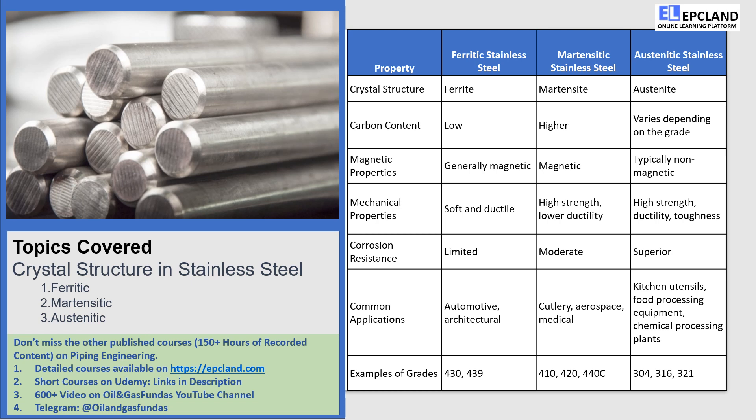Next up is martensitic stainless steel. This type of steel has a martensite crystal structure, which is achieved by quickly quenching high-temperature austenite. Martensitic stainless steel has a higher carbon content than ferritic stainless steel, which gives it its high strength. However, it also has lower ductility and fracture resistance. It can be tempered to reduce its strength while vastly improving its toughness and ductility. This type of steel is magnetic and is commonly used in cutlery, aerospace, and medical devices.